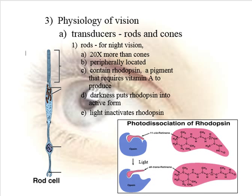Let's look at these transducers. If we start with the rods, it turns out that you have 20 times more rods than you do cones. So mostly what you have in your eye are these rods and not the cones.